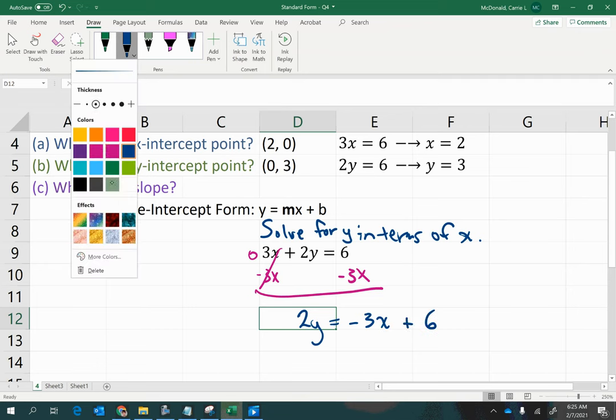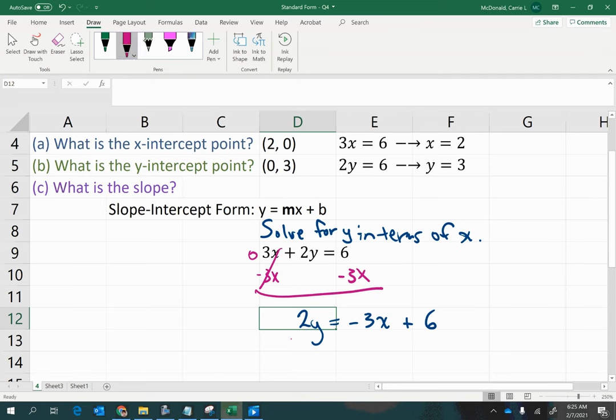Then we can divide by 2 to undo this here, making sure to divide it on all the terms on the other side of the equals.